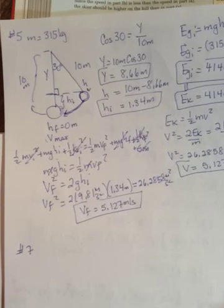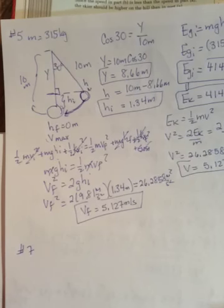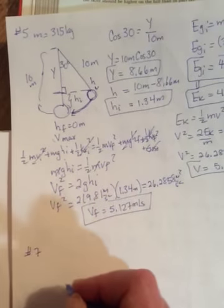Velocity when it reaches the bottom is 9.7 meters per second. The ramp makes an angle of 25 degrees.